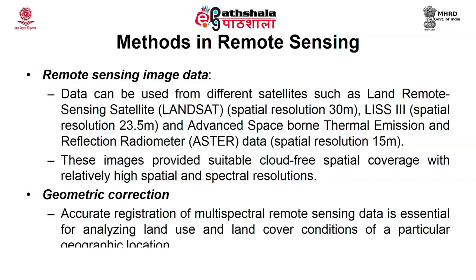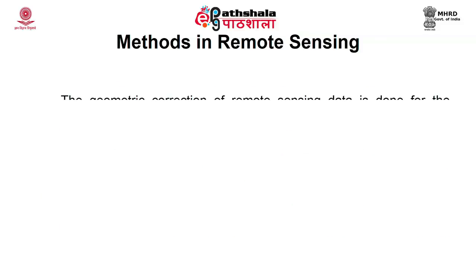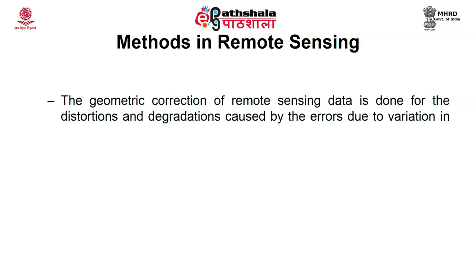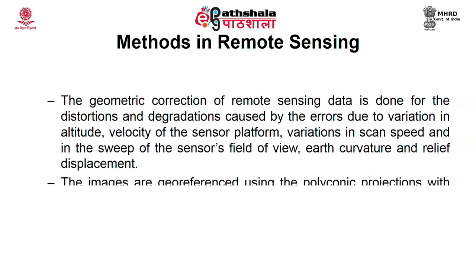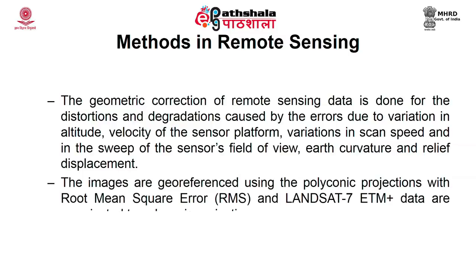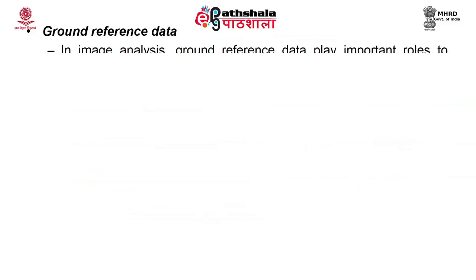The next requirement is geometric correction. Accurate registration of multi-spectral remote sensing data is essential for analyzing land use and land cover conditions of a particular geographic location. The geometric correction of remote sensing data is essential to address distortion and degradation caused by errors due to variation in altitude and velocity of the sensor platform, variation in scan speed, sweep of the sensor's field of view, earth curvature, and relief displacement. Images are georeferenced using polyconic projections with root mean square error, and Landsat 7 Enhanced Thematic Mapper and other satellite data are reprojected.